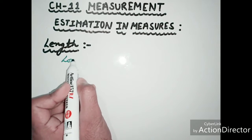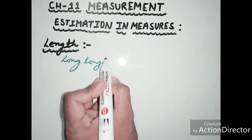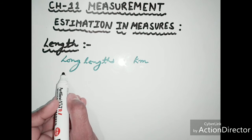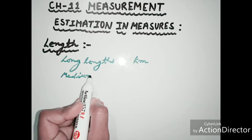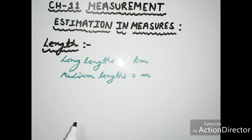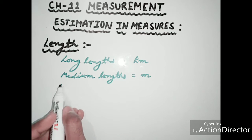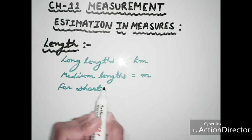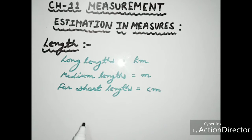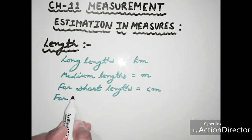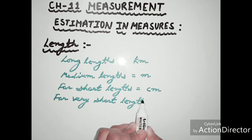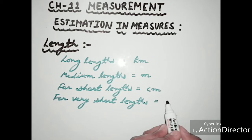So to summarize: for long lengths we use kilometers, for short lengths we use centimeters, and for very short lengths we use millimeters.